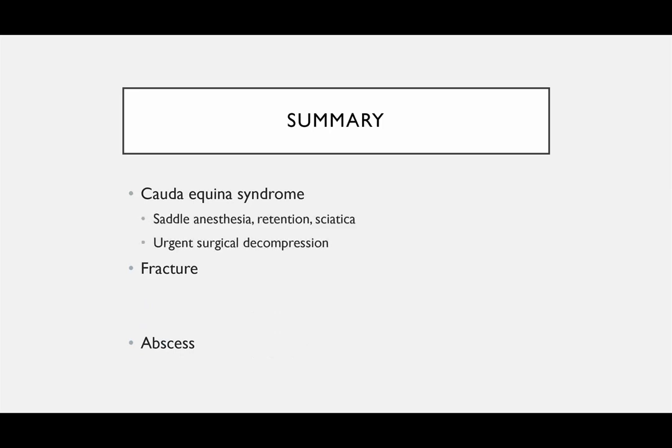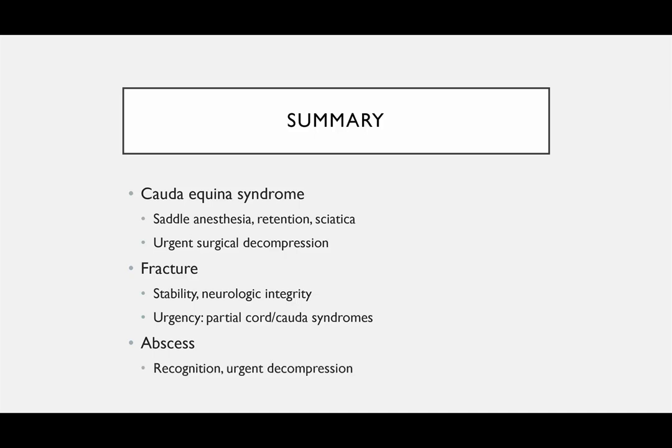To summarize: cauda equina syndrome — keywords are saddle anesthesia, urinary retention, sciatica, and urgent surgical decompression. For fractures, think about concepts of stability and neurologic integrity; when lesions lead to partial cord or cauda equina syndromes, treatment may be urgent. With infection, they're not always easy to pick up on — recognition is important, and urgent decompression is needed in the face of neurologic deficits.